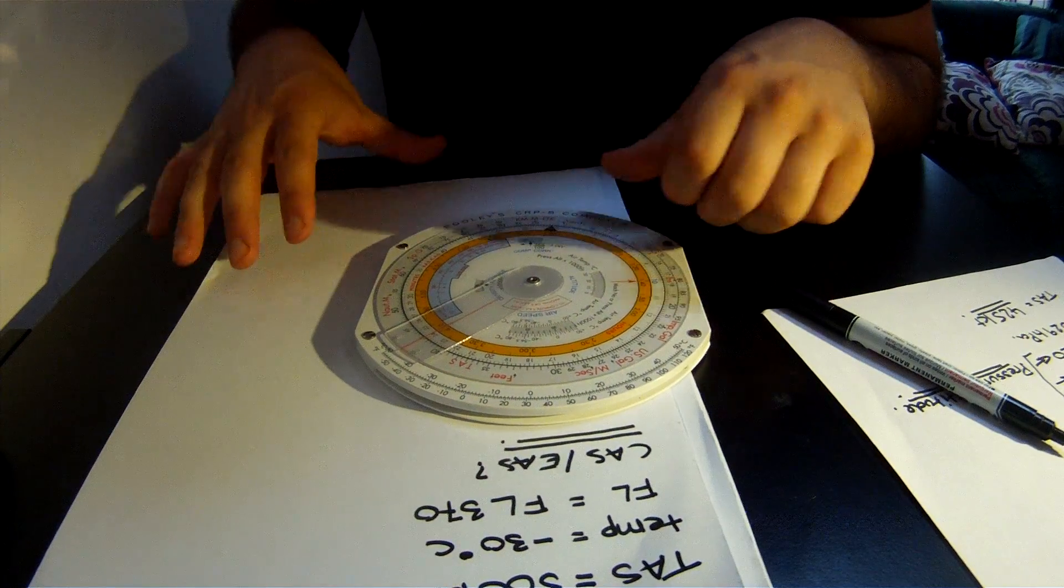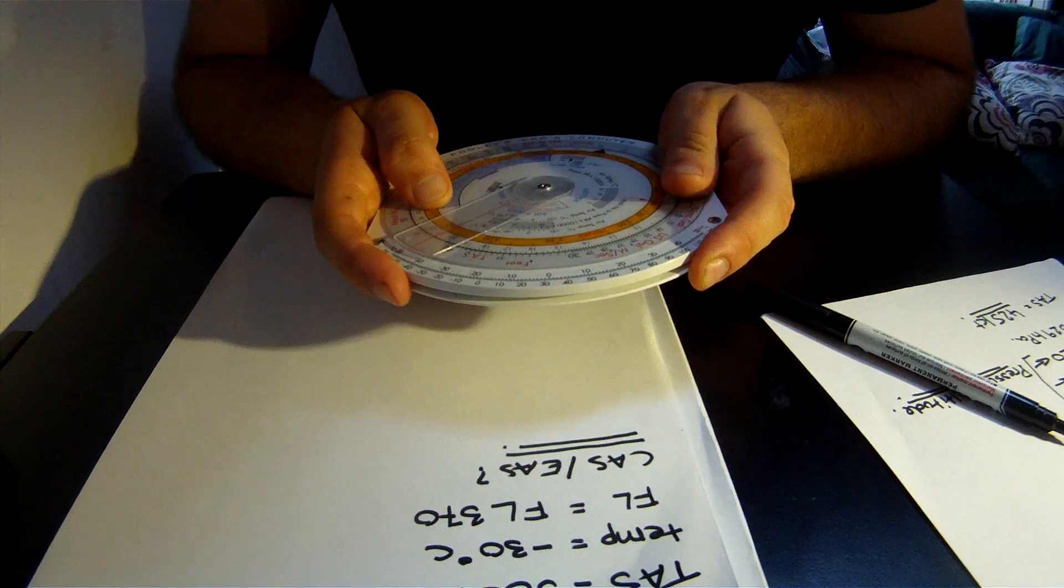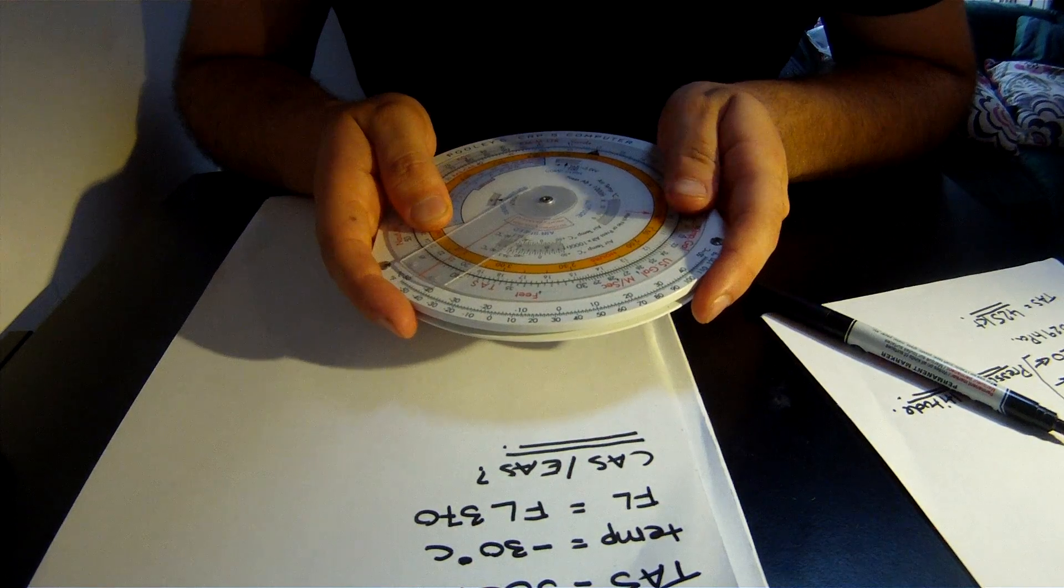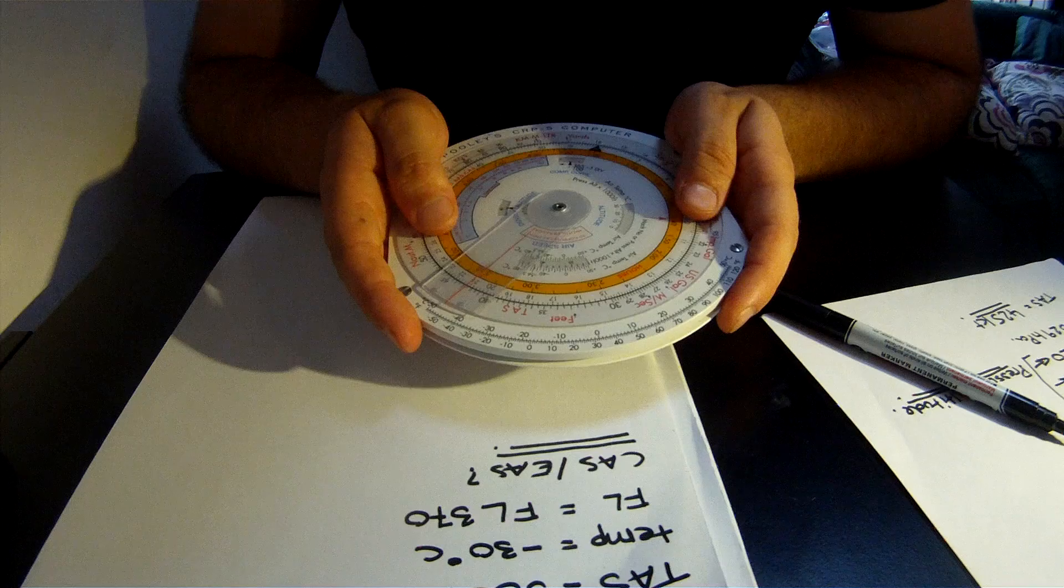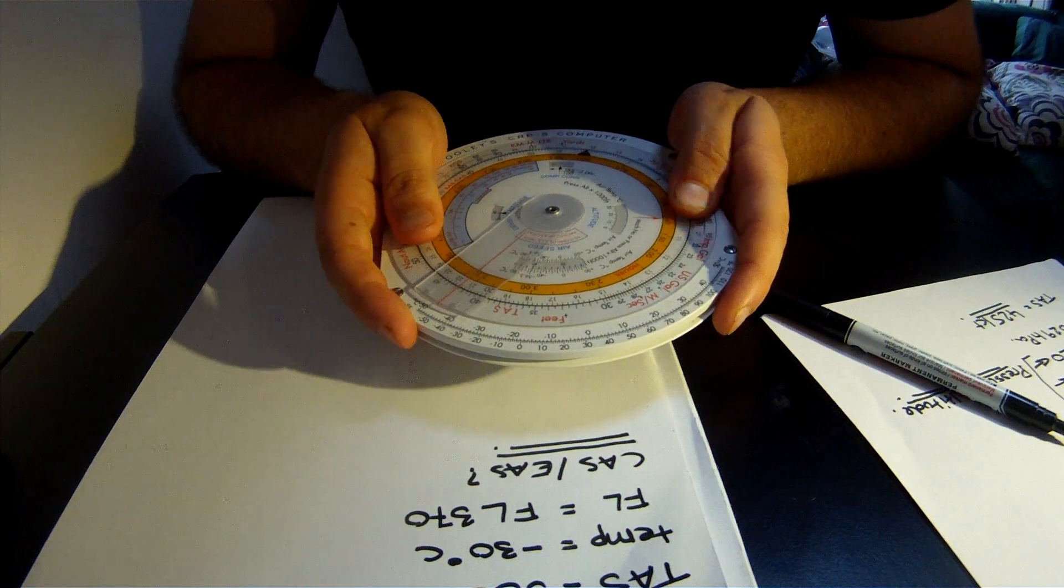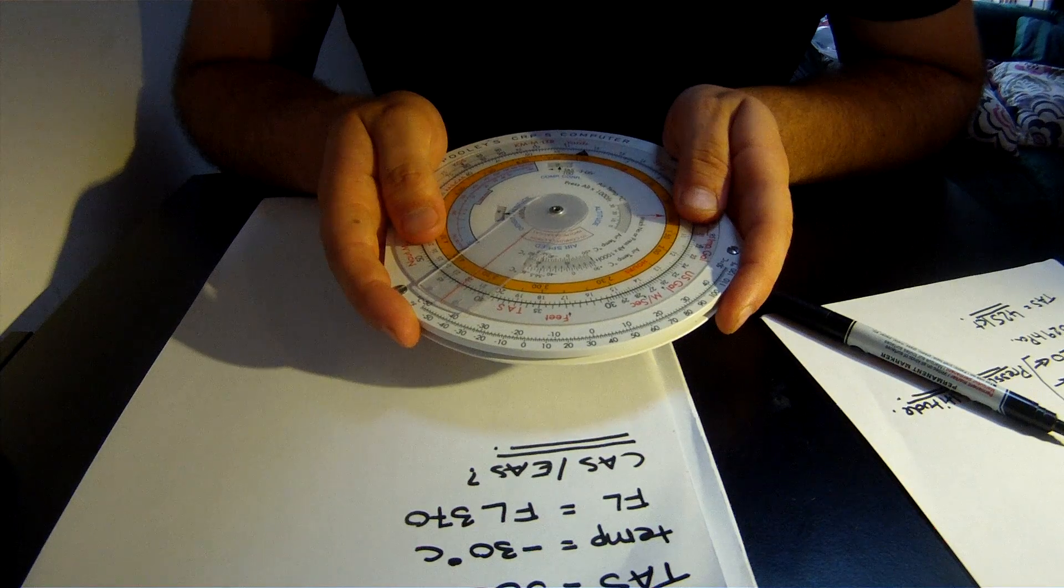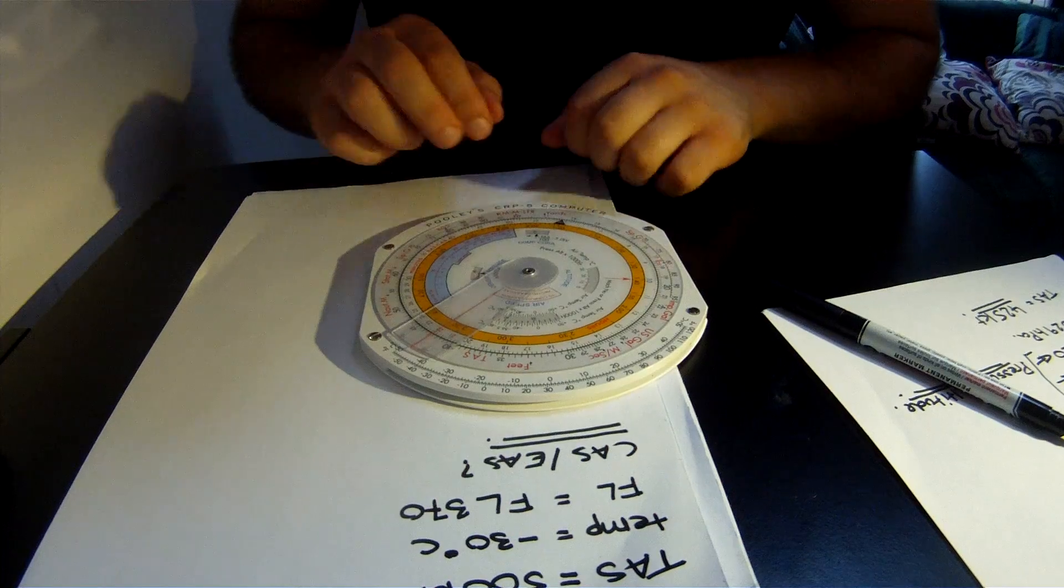Like we did before, we're going to align in the window. We're going to line minus 30 degrees with flight level 370. One good trick not to get confused: use zero degrees as a datum, then move to 37, and then move the temperatures minus 10, minus 20, minus 30. Perfect.